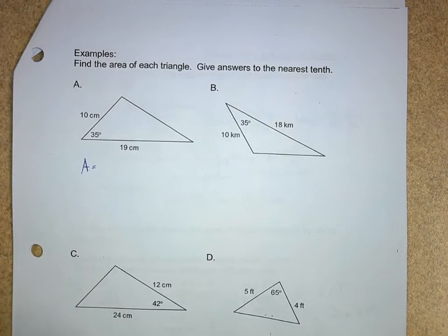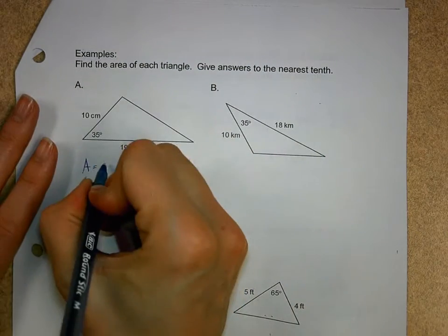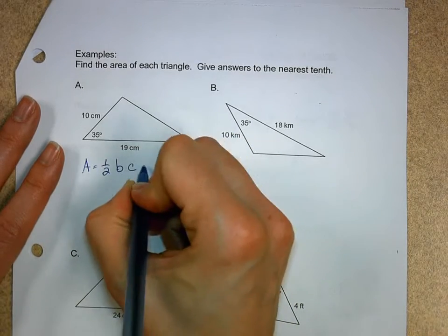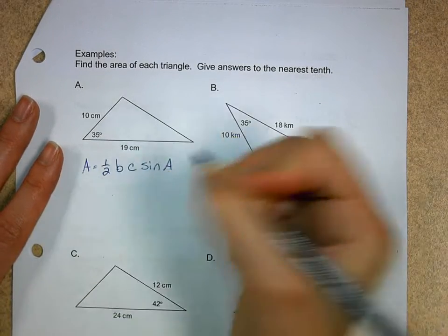if I know two sides and the included angle, I can just go one half base, or B, times C, times the sine of A.